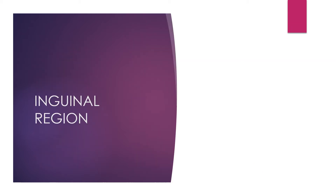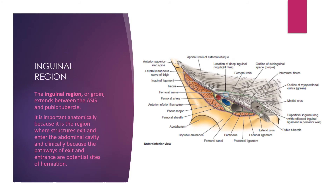Now we come to the inguinal region. The inguinal region is the area beneath the inguinal ligament, extending between the anterior superior iliac spine and the pubic tubercle. It is important because there are many structures that exit and enter the abdominal cavity through this area — the femoral artery, femoral vein, femoral canal (a potential space), and femoral nerve. Additionally, the inguinal canal is here, through which the spermatic cord passes outside the abdominal cavity. Clinically, this area is important because hernias develop here — inguinal hernias and femoral hernias.